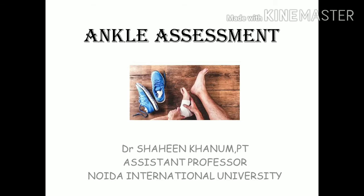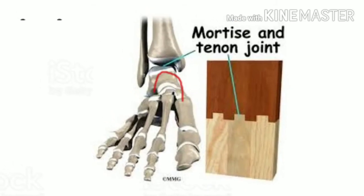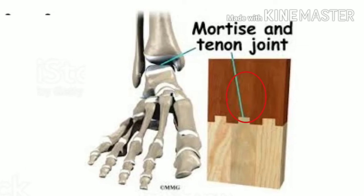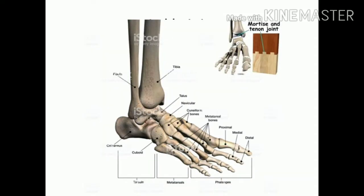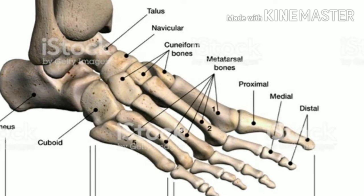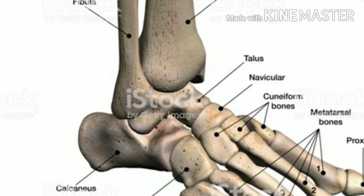First we'll look at the anatomy of the ankle joint. The ankle joint is made from a mortise — a cave-like shape formed by the tibia and fibula bones — and then there is a tenon, which is the talus, that fixes into this dome shape. That's why it's also called the talocrural joint. Apart from this, we have the navicular just in front of the talus, the calcaneum which is the heel, three cuneiform bones, the cuboid on the lateral side, and then the metatarsals and phalanges.